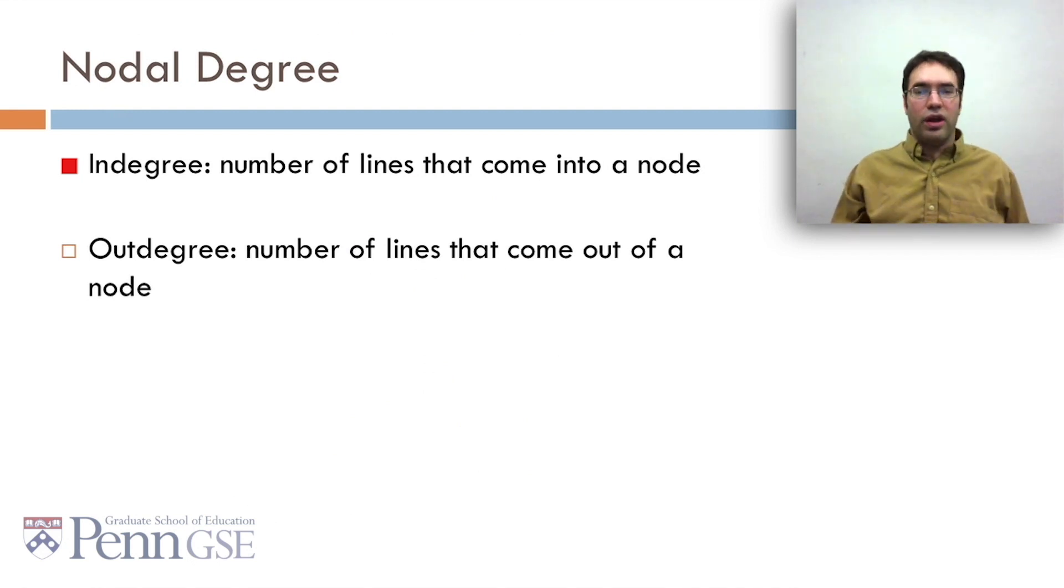With nodal degree, you can also think, if you've got a directed graph, a graph with arrows, about in-degree, the number of lines that come into a node, and out-degree, the number of lines that come out of a node. So, if you think about that in school terms, think about the student who everyone talks to, and the student who talks to everyone. It might not quite be the same thing.